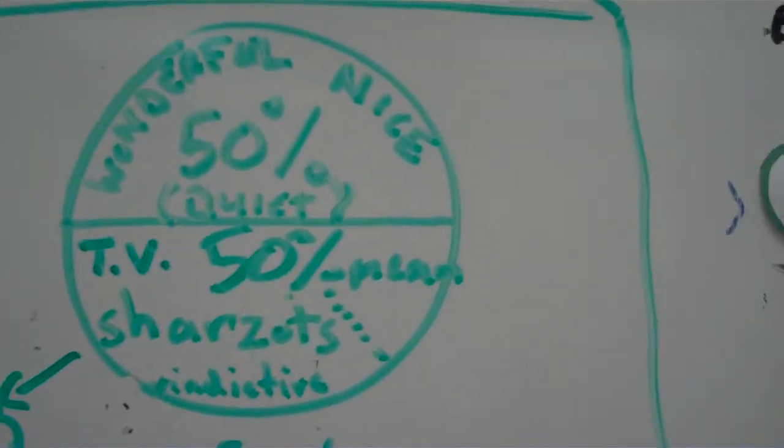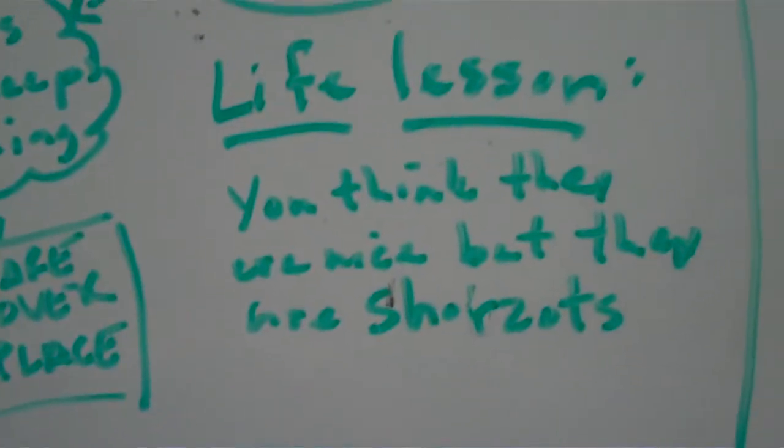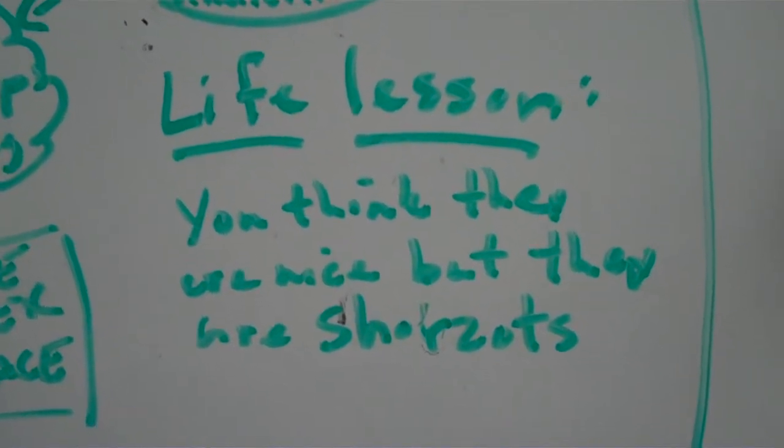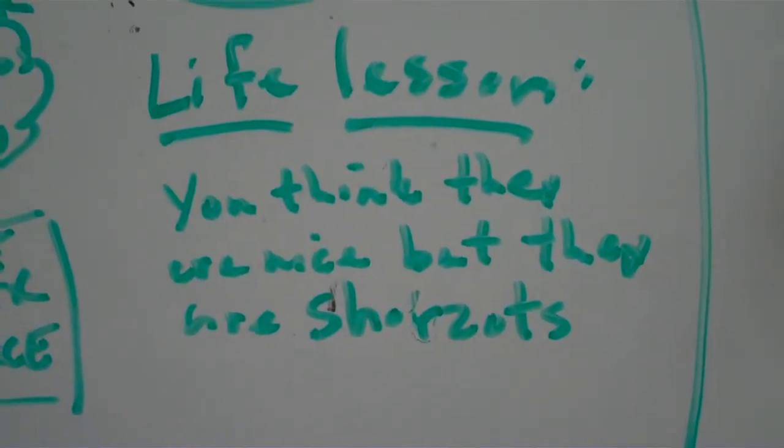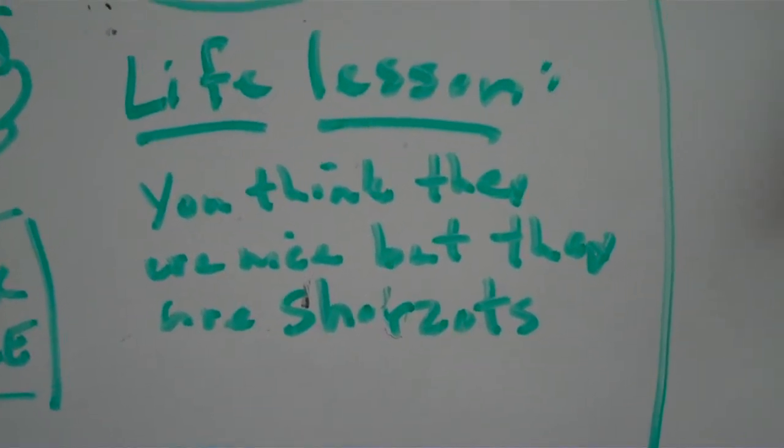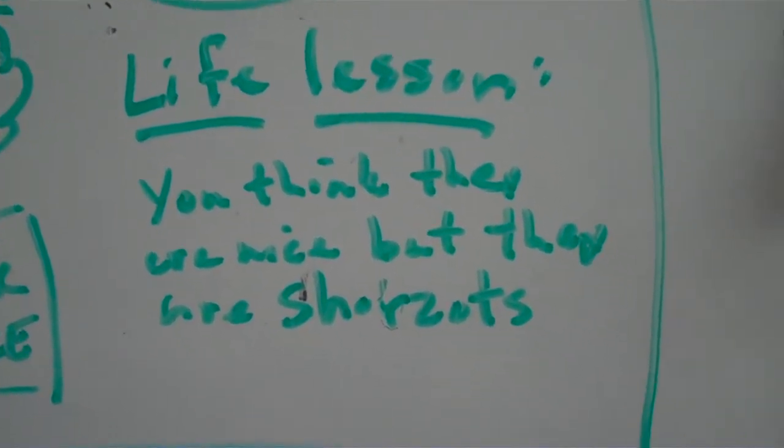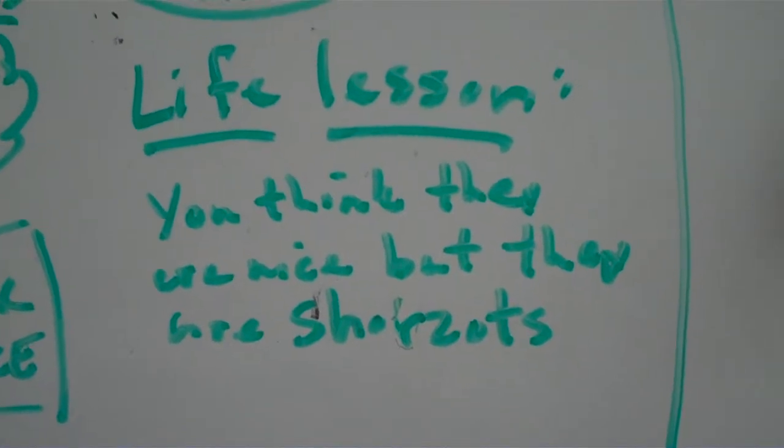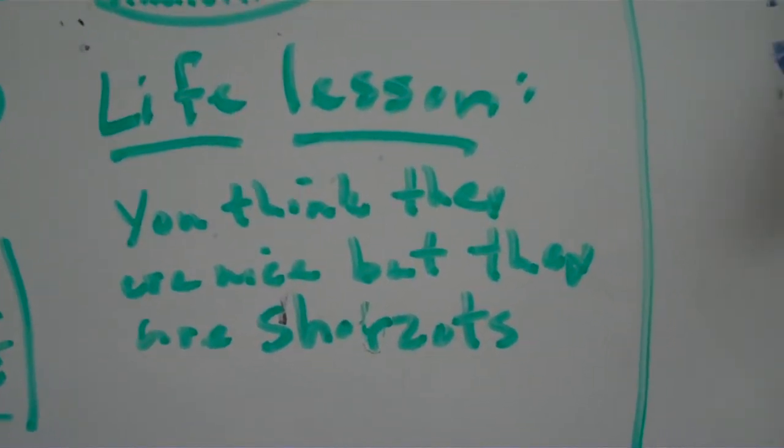And then, as you grow older, there's sort of a life lesson tied to this. And the life lesson is, I have direct examples of this. You think you're dealing with someone who's nice, but in the end, they kind of show that they're, and I made up a word for these people, charzots.